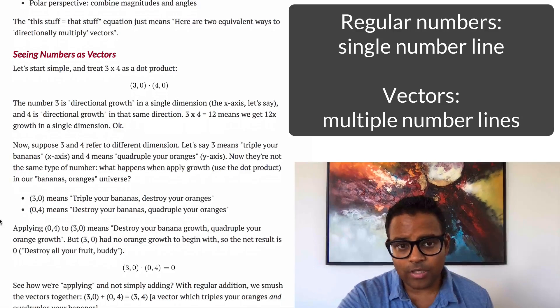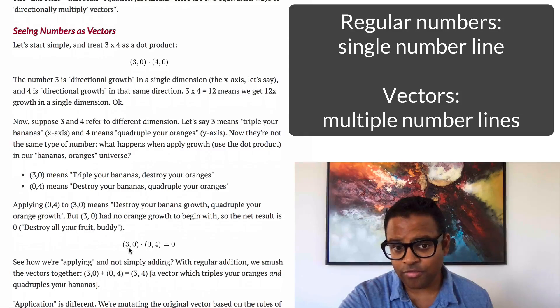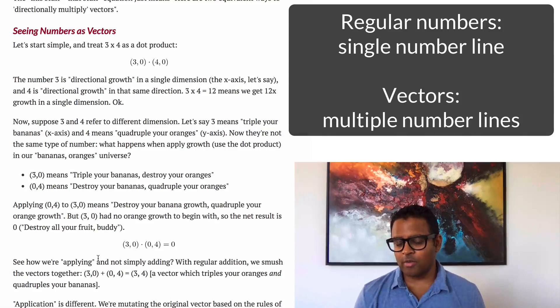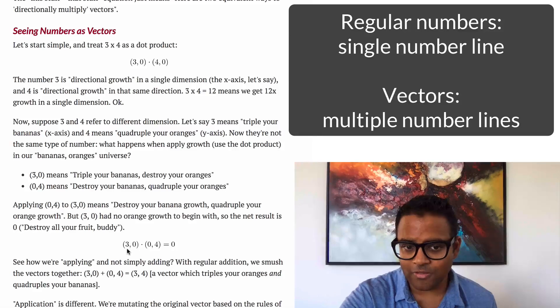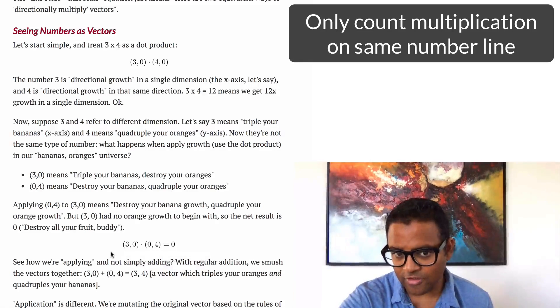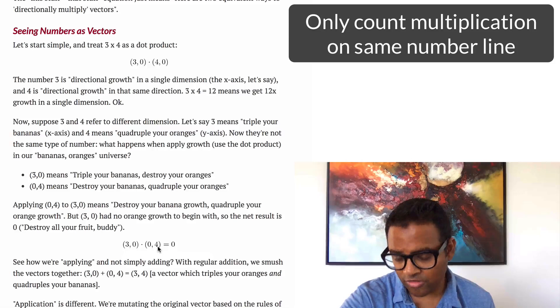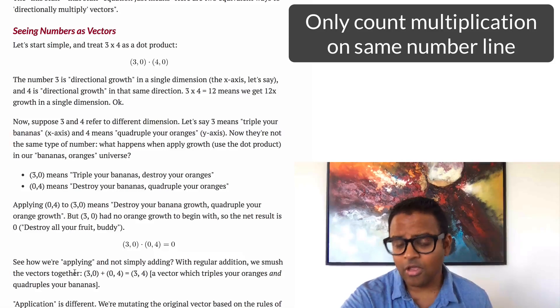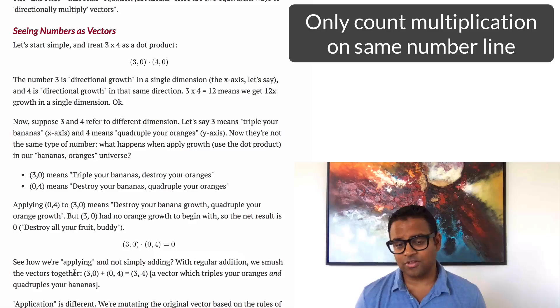Now if we had different directions like this, 3,0 and 0,4, there's actually nothing in common. Because if we take a look, the x component here, there's something here, but there's 0 here, so that's nothing. There's nothing here and something here. That's also nothing. So the overlap in this case is actually 0.